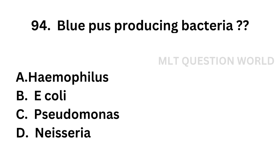Question number 94. Blue pus producing bacteria: Option A: Haemophilus. Option B: E. coli. Option C: Pseudomonas. Option D: Neisseria.